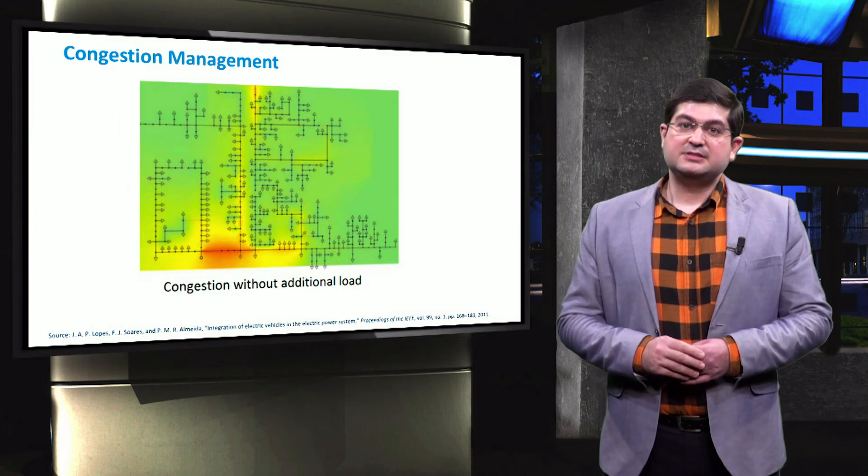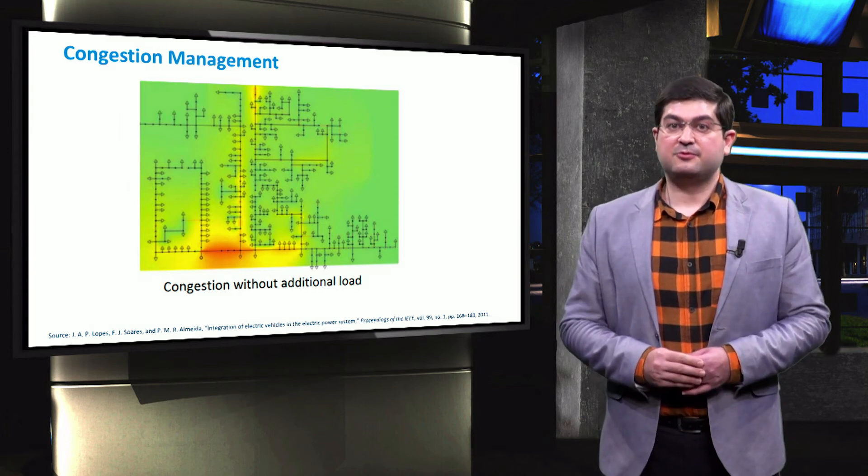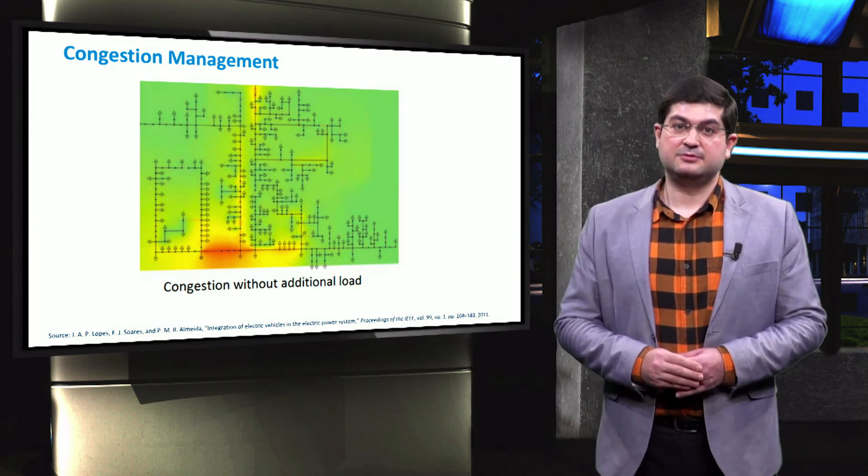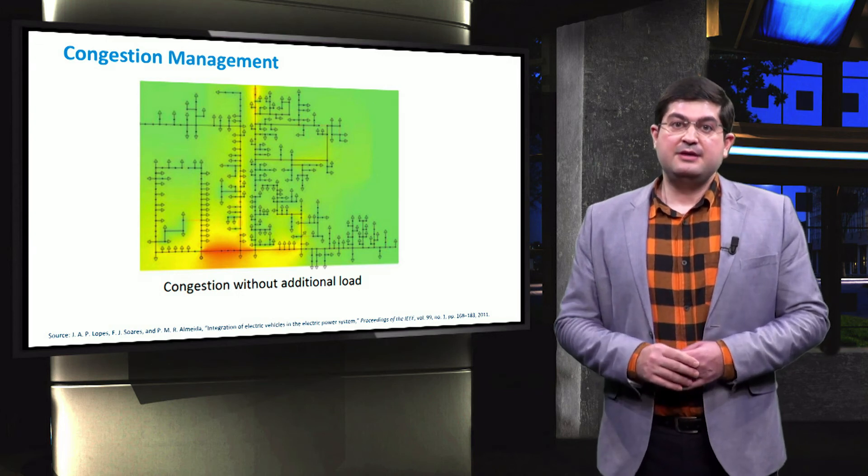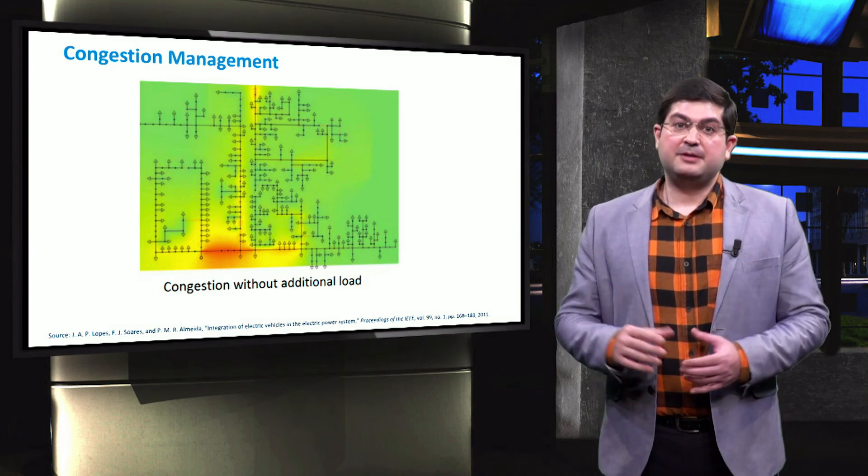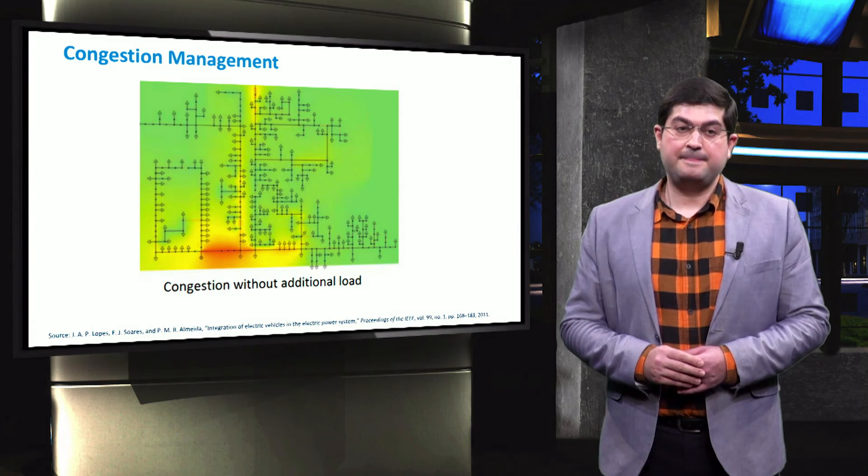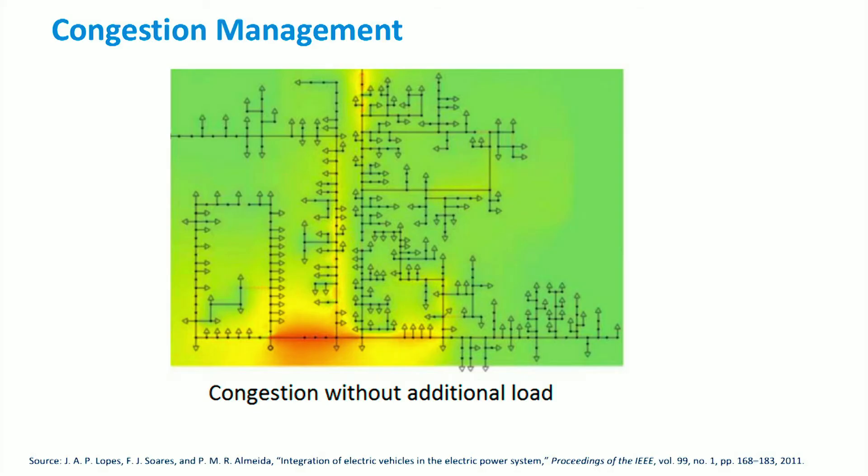There are more ancillary services which we can mention for microgrids during grid-connected mode. As an example, here we analyze a congestion problem in a distribution feeder.